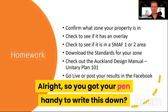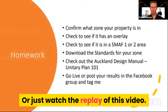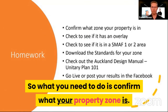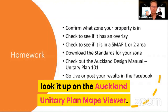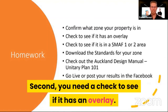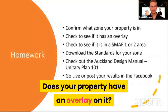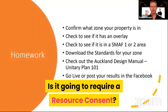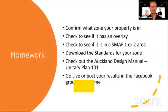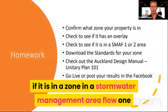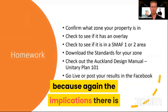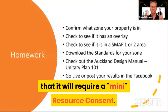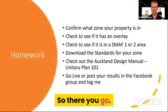So here's your homework. First, confirm what your property zone is — look it up on the Auckland Unitary Plan maps viewer. Second, check to see if your property has an overlay — does it require a resource consent? Third, check to see if your property is in a stormwater management area flow one or flow two, because that will require many resource consents. That's it for tonight — that's your homework.